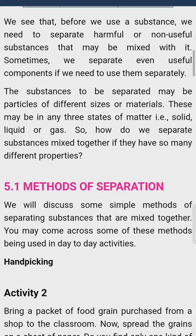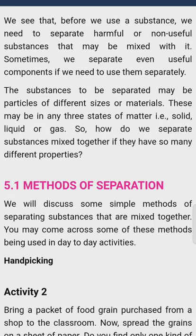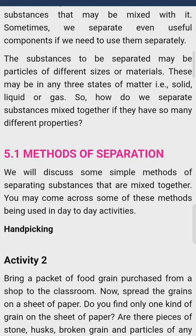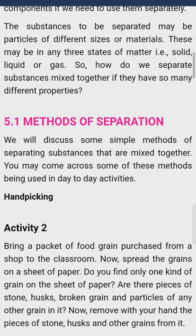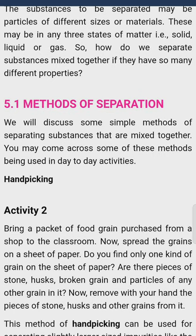हमने देखा कि किसी भी पदार्थ का उपयोग करने से पहले हम उनमें से जो हानिकारक और अनुपयोगी चीजें होती हैं उन्हें निकाल लेते हैं। कभी-कभी हम useful components यानि कि काम में आने वाले पदार्थों को भी separate करके अलग कर लेते हैं। यह पदार्थ किसी भी state of matter में हो सकते हैं — जैसे कि solid, liquid, gas। तो बच्चों, हम इन substances को अलग कैसे करते हैं, जबकि इनकी इतनी सारी अलग-अलग properties हैं?